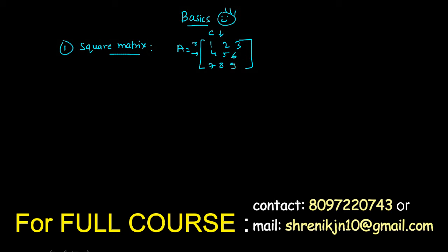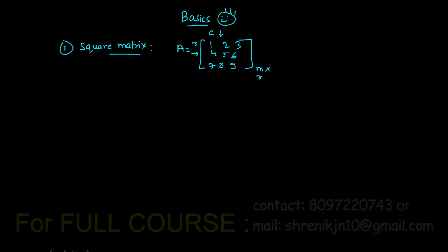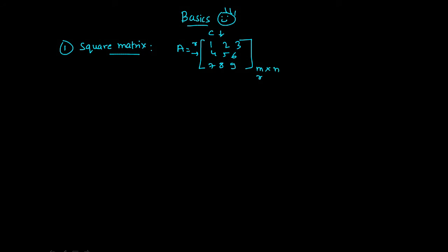As you can see, N — that is the row — and cross N — that is the column — are equal. As you can see, it is a 3×3. This means row is equal to 3 and column is equal to 3. This is known as the square matrix.